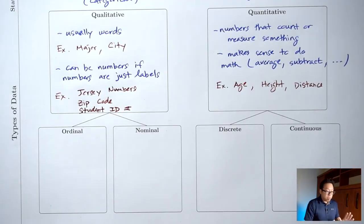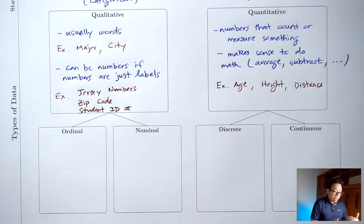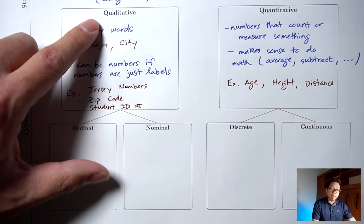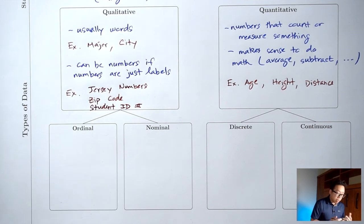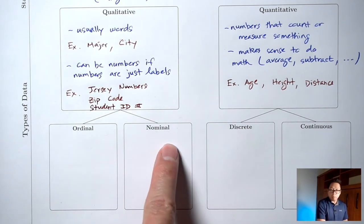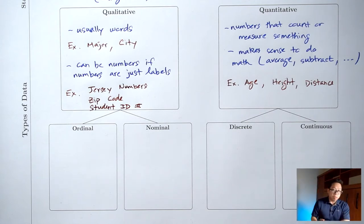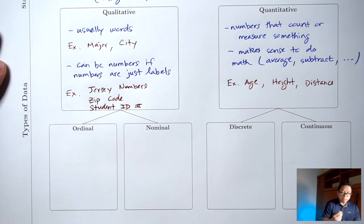Those are the two big categories of data, and each category is broken up further into smaller subcategories. Qualitative data is broken up into ordinal and nominal. These are most of the time words. Ordinal means that there is a natural order.